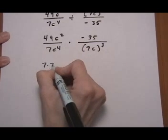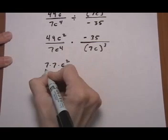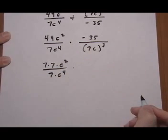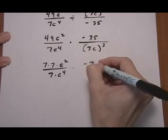So the top left I have 7 times 7 times c squared. Bottom left I have 7 times c to the fourth. And the top right I have minus 7 times 5.